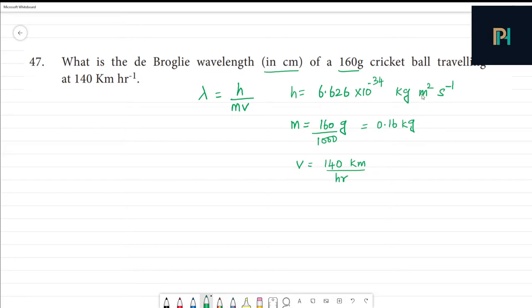If we convert it to meter per second, we convert km to meters by multiplying by 1000. Then we convert hours to seconds. Hour to minutes is 60, minutes to seconds is 60. So 60 times 60 is 3600.